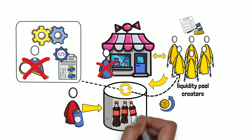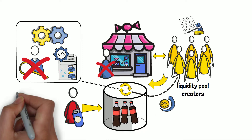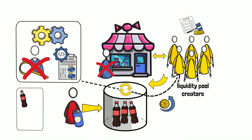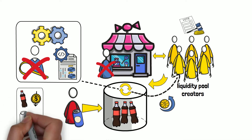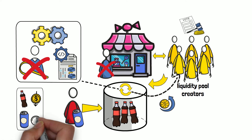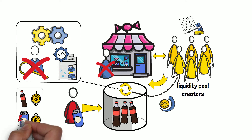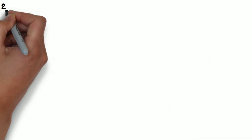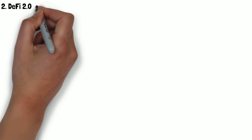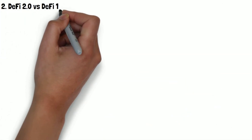Basically, if the pool is full of Coca-Cola, its price will go down, and the price of Pepsi will start to rise because the pool is currently in scarcity of it. So that's about it on the terminology side of things, at least for the time being. Let's move on to DeFi 2.0.